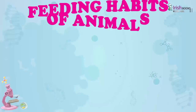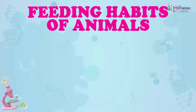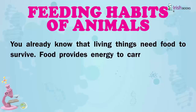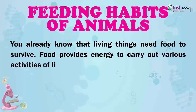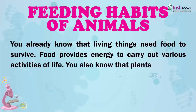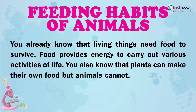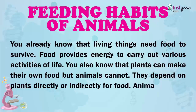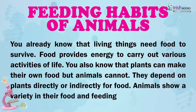Feeding Habits of Animals. You already know that living things need food to survive. Food provides energy to carry out various activities of life. You also know that plants can make their own food but animals cannot. They depend on plants directly or indirectly for food. Animals show a variety in their food and feeding habits.